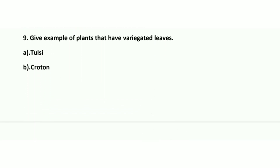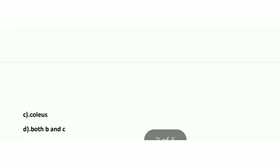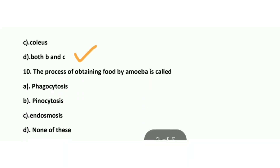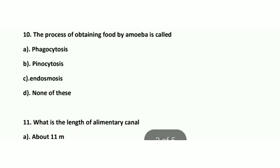Question number 9: Give an example of plants that have variegated leaves. The right answer is both B and C: Croton and Coleus. Both of these plants have variegated leaves.